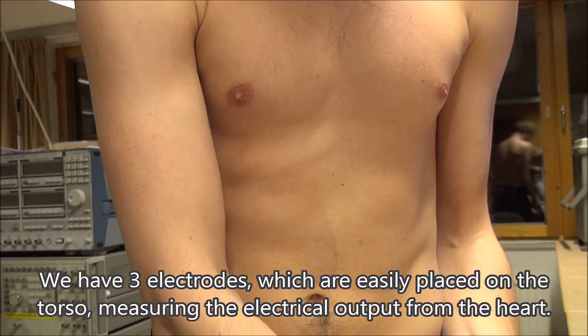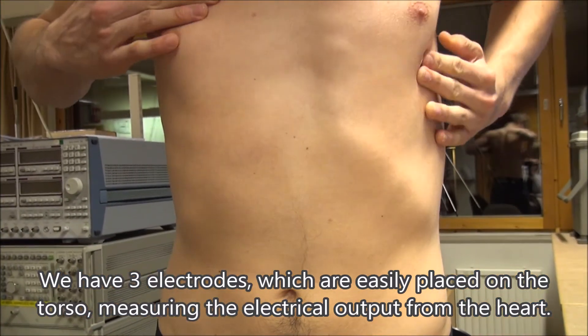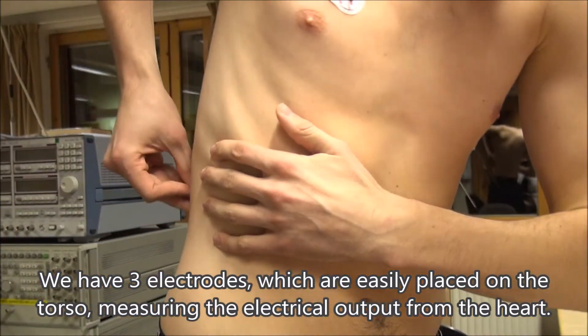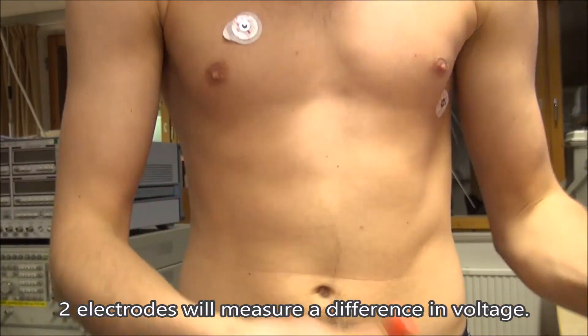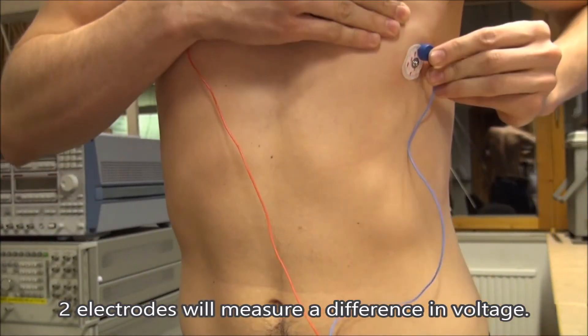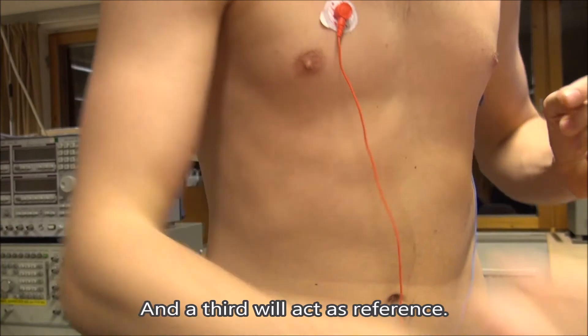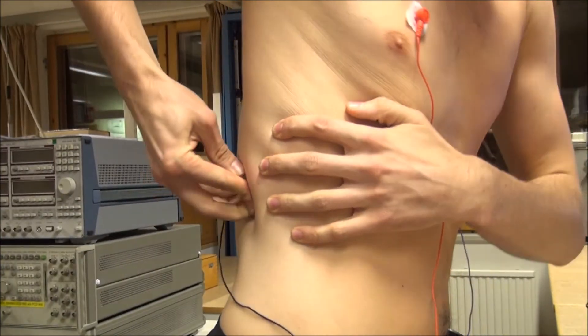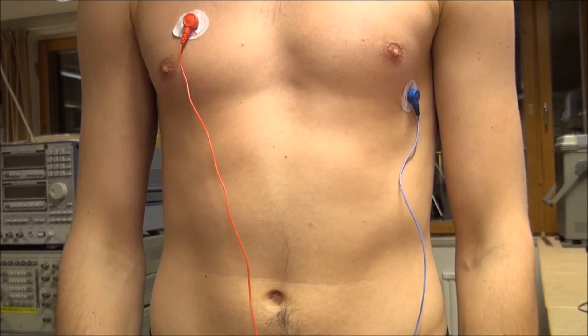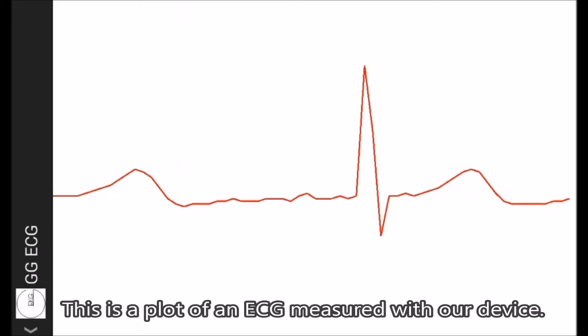We have three electrodes which are easily placed on the torso, measuring the electrical output from the heart. Two electrodes will measure a difference in voltage, and a third will act as reference. The sensors make an analog measurement and filter out the relevant frequencies. This is a plot of an ECG measured with our device.